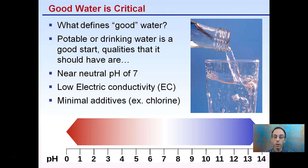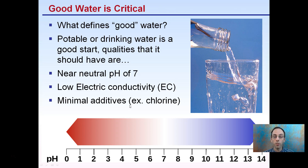Good water is critical. So what defines good water? Potable drinking water is a good start, but you're also looking for properties such as a neutral pH around 7, low EC or electrical conductivity, and minimal additives such as chlorine. Chlorine is going to kill some microbes and could cause other issues with growing plants, while still being perfectly fine for drinking. So potable water is a good place to start, but these are other properties you should be checking.